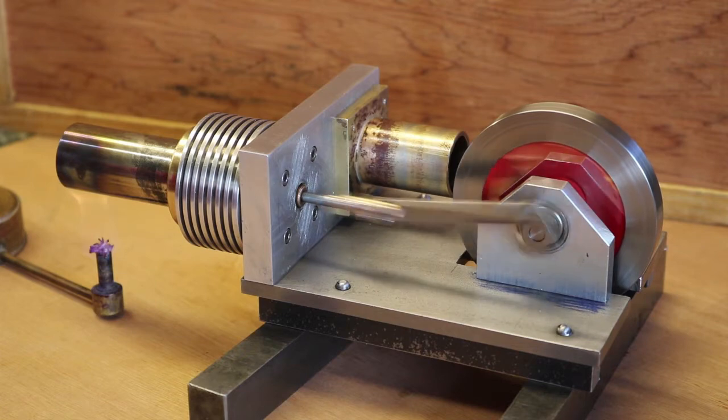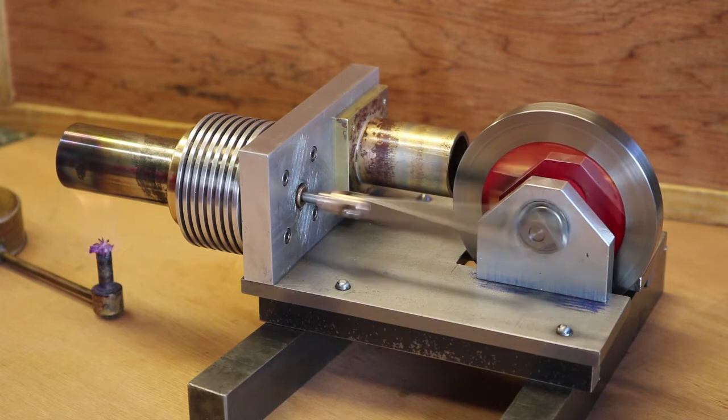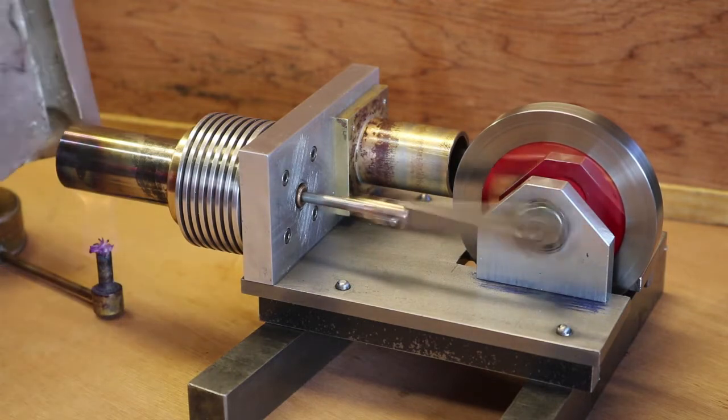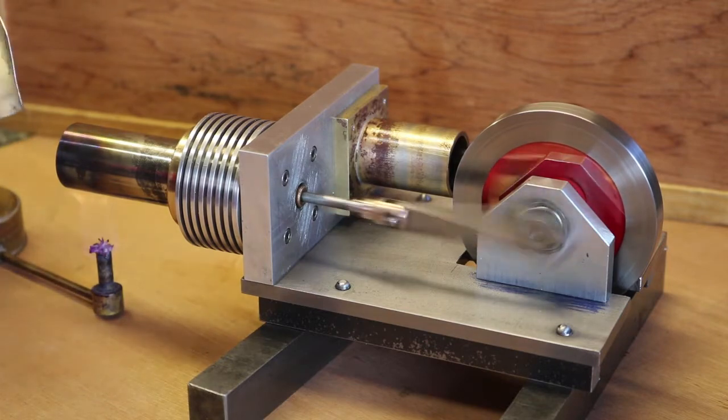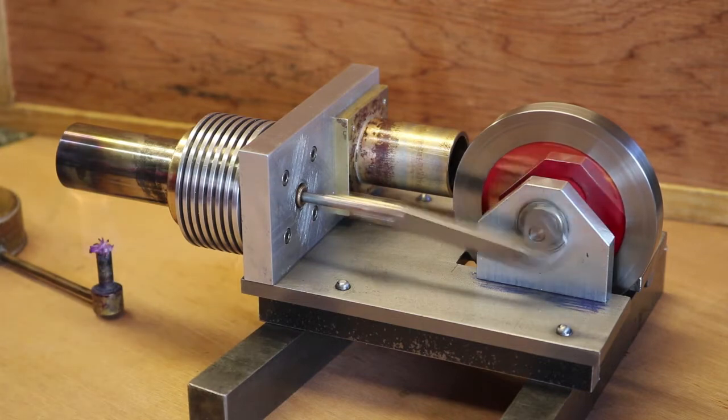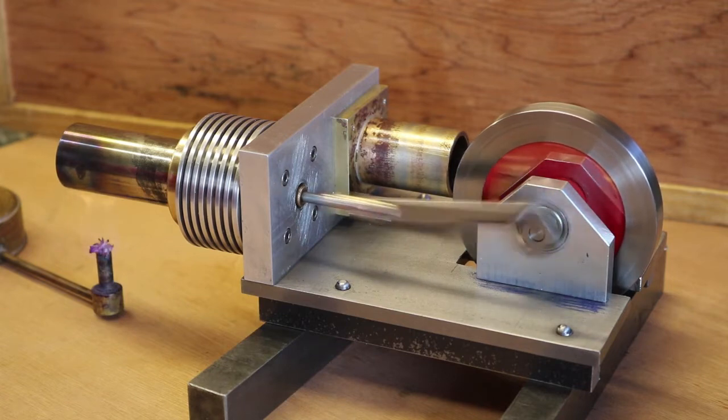And really there's not much more to say about it. Something they don't like is drafts and it's always helpful if you can arrange a little windshield to go around the flame. I won't put this one there now because the engine's running nicely but they don't like it if there's a draft that blows the flame away from the cylinder.